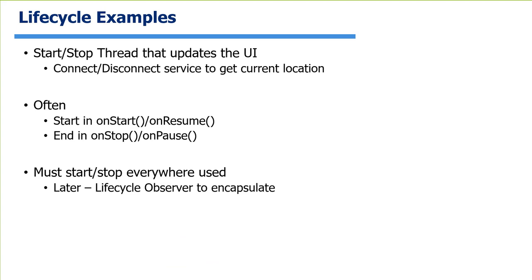Some examples of things you might want to do: if you have a thread that updates the user interface or does animation, you can start and stop it in onStart/onStop. Or maybe disconnect a service to get your current location. Whether you do things in onStart or onResume depends on whether you care about them being active when the user can't interact with the screen. If the user has to be able to interact, use onResume; otherwise, use onStart. Then pair the corresponding ending in onStop or onPause.